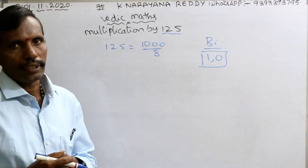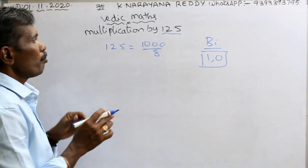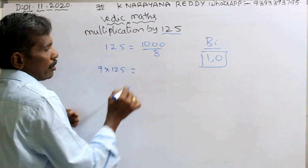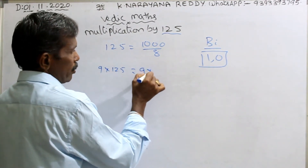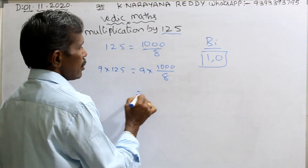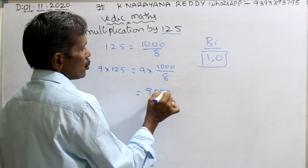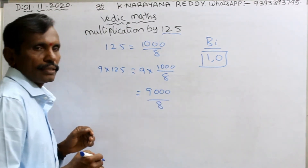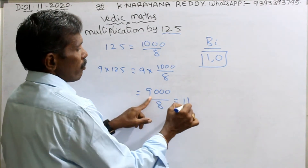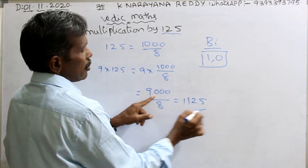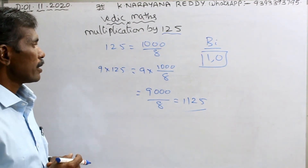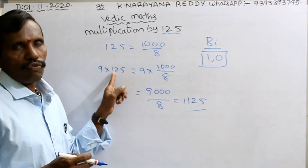So 9 into 125 means 9 into 1000 by 8, that means 9000 by 8. Now divide: 8 ones, 8 twos, 8 fives. The answer is 1125. This is how you can do multiplication by 125.